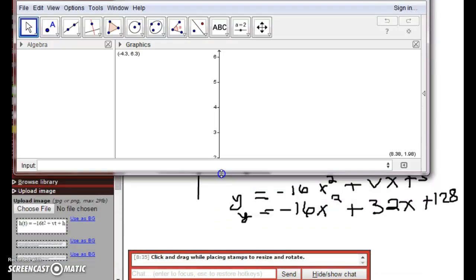Now I'm going to show you how to do this in GeoGebra. I opened up my GeoGebra, and I'm just going to put in the equation right here. So y = -16x² + 32x + 128.